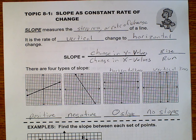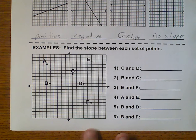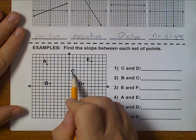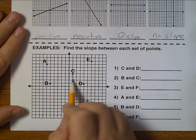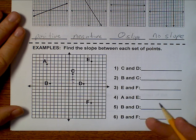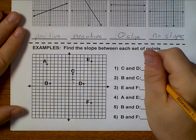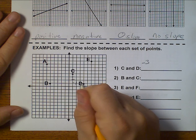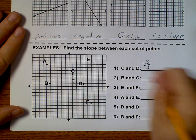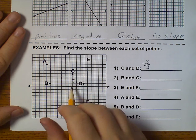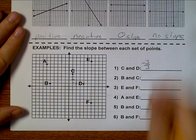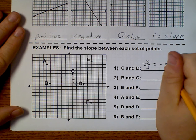Now let's actually practice finding slope. I have a bunch of points on a graph, and I want to find the slope between the given points. For C and D, I'm actually falling three and running three. I fell three — that's negative three. I ran three to the right — that's positive three. And negative three over three equals negative one.